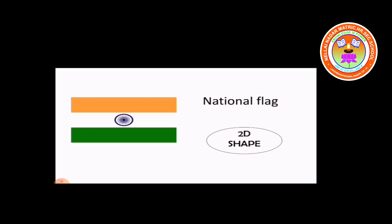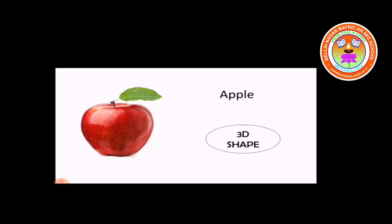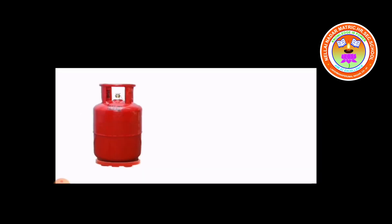Next — what is this? This is an apple. Is it 2D or 3D shape? Yes, this is a 3D shape. Very good. What is this? This is a gas cylinder. Is it 2D or 3D shape? Very good — 3D shape.